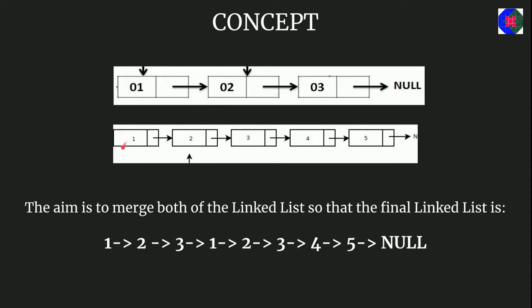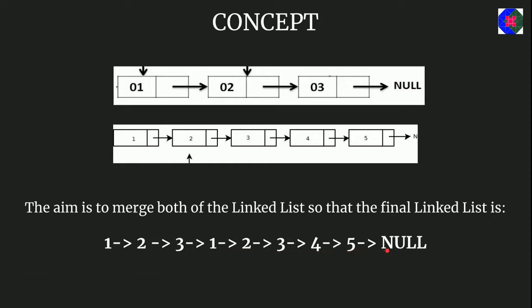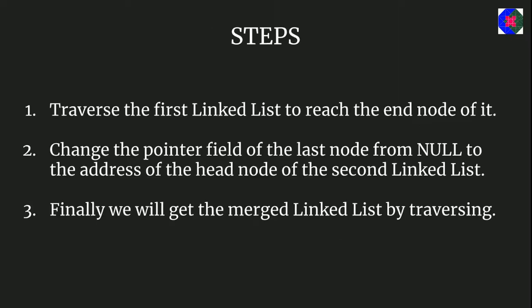This is one singly linked list and this is another singly linked list. The nodes are 1, 2, 3 and here the nodes are 1, 2, 3, 4, 5. So if we want to merge both of these singly linked lists, we will get 1, 2, 3, then again 1, 2, 3, 4, 5 — looking like 1, 2, 3, 1, 2, 3, 4, 5. That is the main aim of merging the two linked lists.